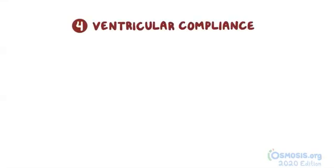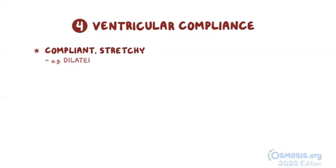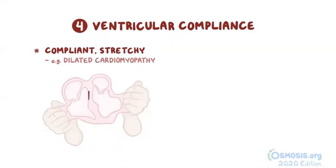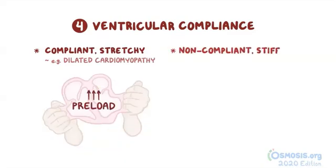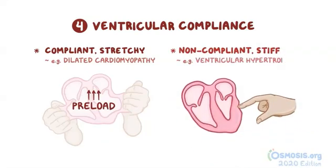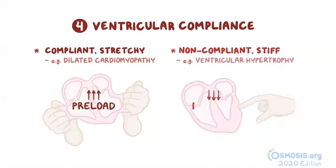The next factor is ventricular compliance — simply the flexibility of the ventricles. Compliant, stretchy ventricles, such as seen in dilated cardiomyopathy, increase preload, while non-compliant, stiff ventricles, such as seen in ventricular hypertrophy, decrease preload.